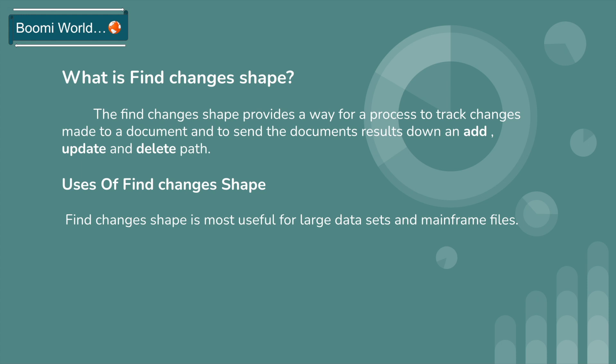Find Changer Shape is most useful for large data sets and mainframe files where a full capture of the data always needs to be retrieved from the source system. Suppose if you want to get the entire data from the source system, you can use Find Changer Shape immediately after the source system so that you can filter the data — new data, updated data, or deleted data.